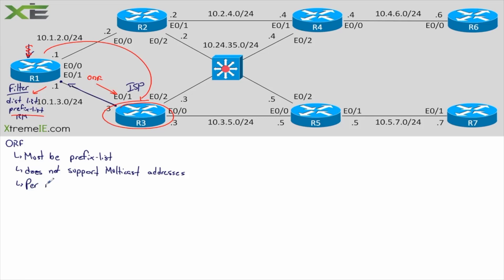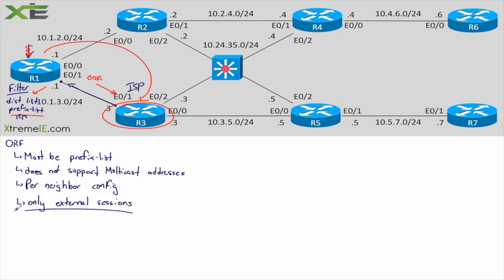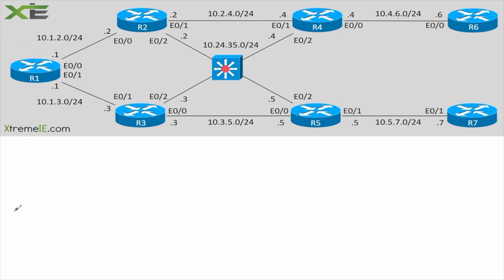This is also a per-neighbor configuration — not a global command that filters for everybody. It has to be configured per neighbor. Last thing: it's only on external BGP sessions. If I'm running IBGP, I'm not going to configure this — only on external sessions.